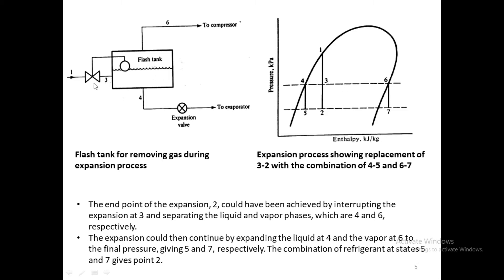The refrigerant comes in at state 3 where we install the flash tank. Gas or vapor goes to the compressor at state 6, and the liquid goes through the expansion valve to the evaporator. The flash tank performs as the flash gas removal system. Vapor velocity inside the tank should be less than 1 meter per second to provide adequate separation, determined by dividing the volumetric flow of vapor by the liquid surface area. The most efficient way to remove flash gas would be to separate it continuously as it forms, but no practical means has been developed for that.